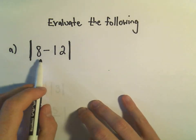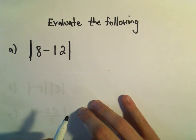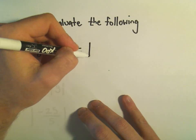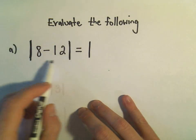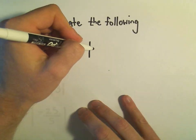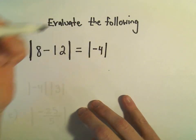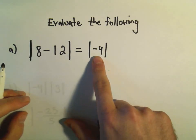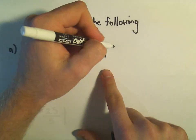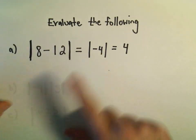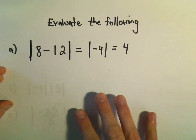So we're going to take the absolute value of 8 minus 12. And again on these problems, typically I just try to work inside out. So if we do 8 minus 12, we get negative 4. And then remember if we take the absolute value of a number, a negative number, it simply turns into the positive of that number. So the absolute value of negative 4 is simply 4.